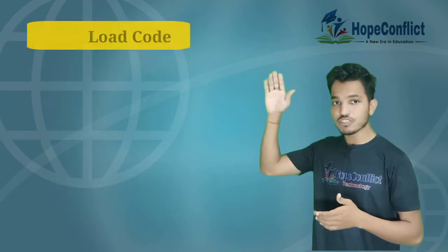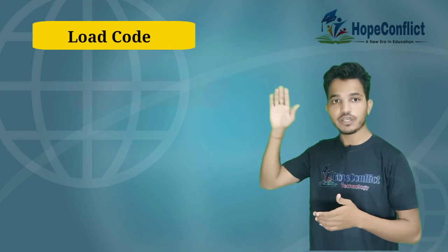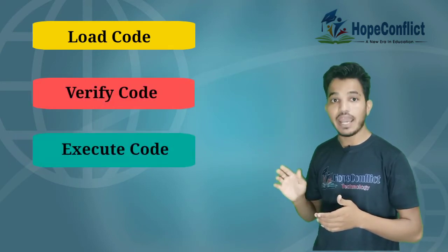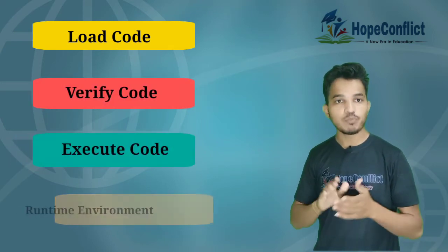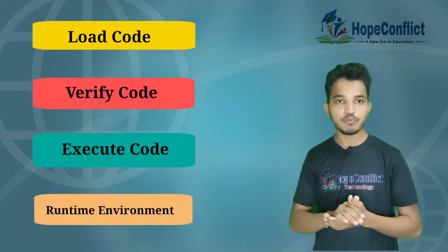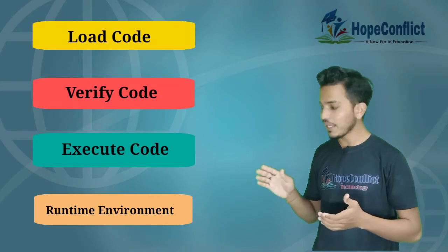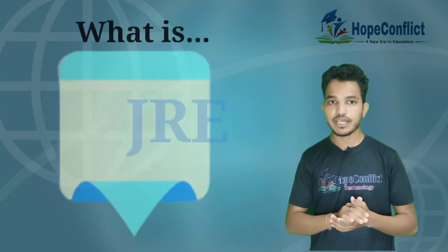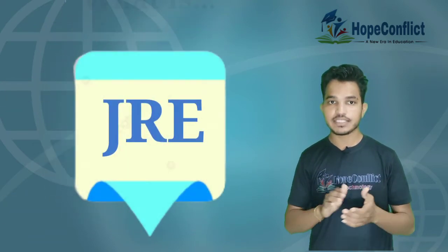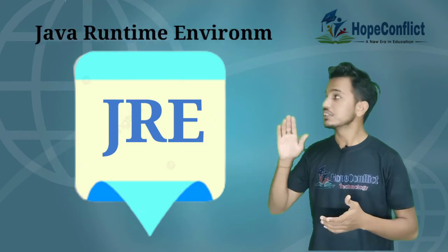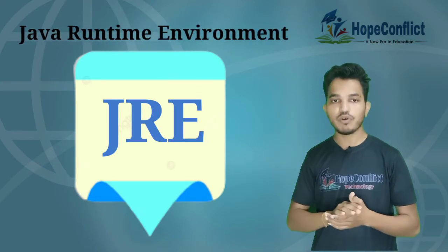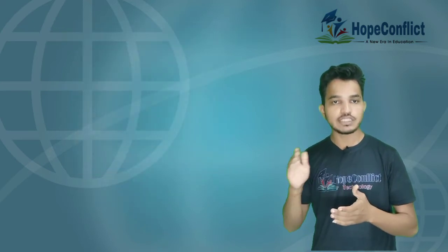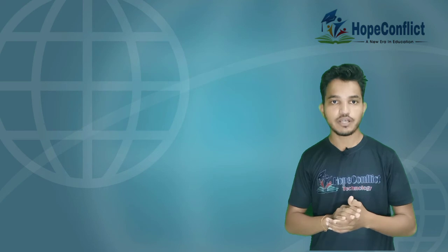JVM first loads the code, then verifies the code, then executes the code, and provides a runtime environment to that executable code. Now, what is meant by JRE? JRE stands for Java Runtime Environment and provides a runtime environment to the executable code. It is also an implementation of JVM and internally contains JVM.